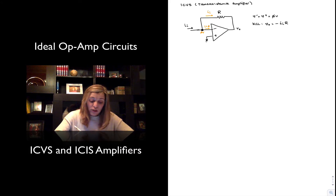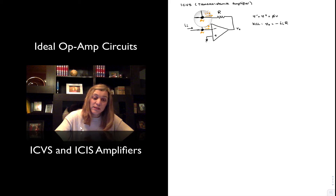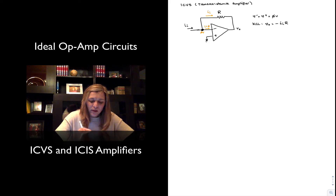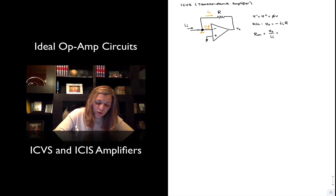It is negative because the voltage is dropping. The current comes from the negative input terminal — that's where one terminal of the resistor is connected — and flows from that node, which is sitting at zero volts, towards V_out. From here, I can come up with an expression for my transresistance R_m, which is output voltage over input current, equal to negative R.